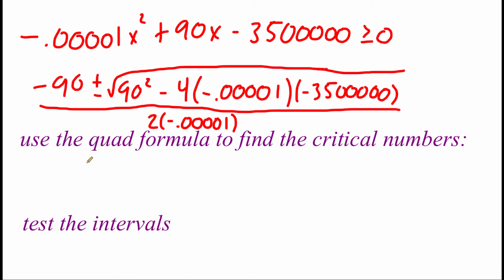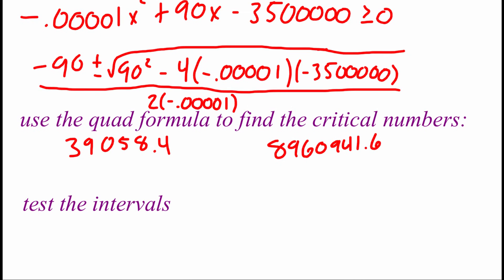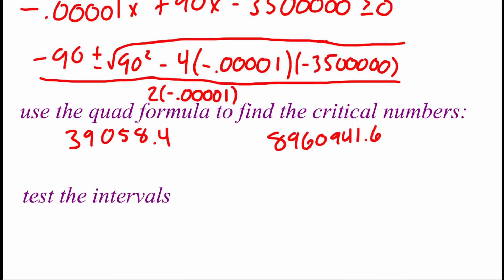I typed this into my calculator and got critical numbers at 39,058.4 and at 8,960,941.6. Now, when I set up my intervals, I'm just going to round these to the nearest whole numbers since we can't produce partial units.